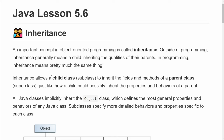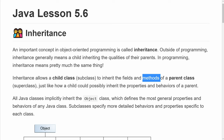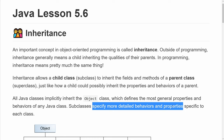You can think about this just like a child and a parent. The child class would inherit the attributes, which are kind of the characteristics, and the methods, which are kind of like the behaviors of a parent. All Java classes implicitly inherit the object class, so all the classes you have defined so far have all implicitly inherited the object class without having to write anything. The object class defines the most general properties as well as the behaviors of any Java class. Subclasses are used when we want to specify more detailed behaviors and properties that are specific to each subclass.